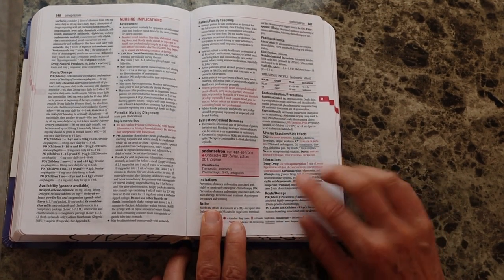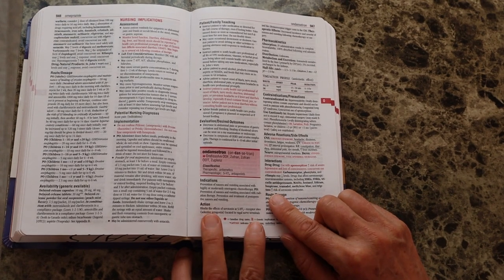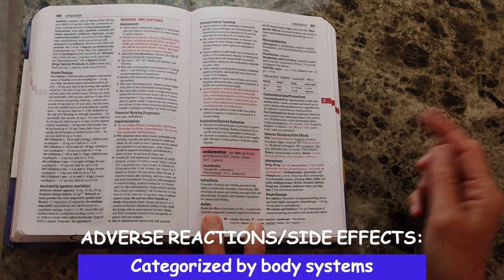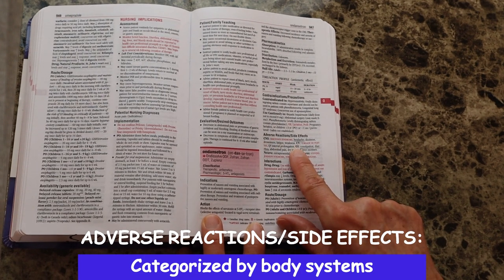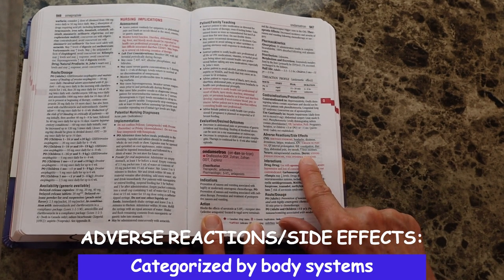Adverse reactions and side effects. These are always categorized by body systems: central nervous system, cardiovascular, GI, and dermatology.